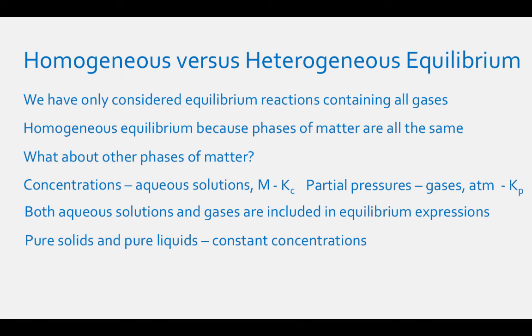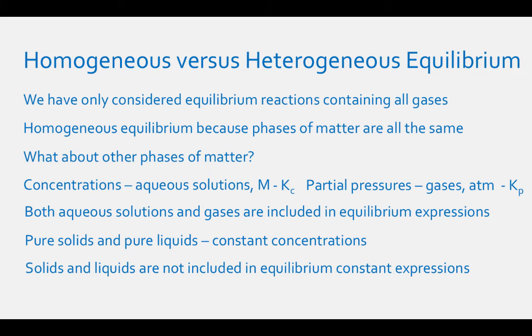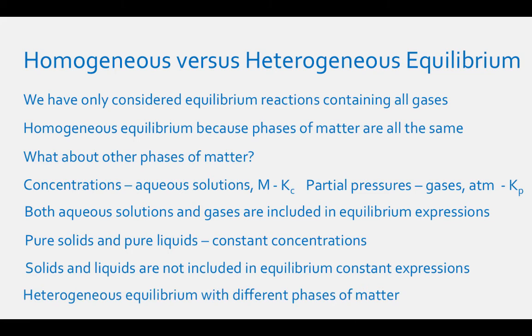What about pure solids and pure liquids? Their concentrations are constant at a constant temperature — their concentrations equal their density divided by their molar mass. At constant temperature, density is constant, and molar mass is always constant for a given substance. Since pure substances have constant concentrations, we ignore them in heterogeneous equilibria. Any reaction that has different phases of matter included in it is an example of a heterogeneous equilibrium reaction.